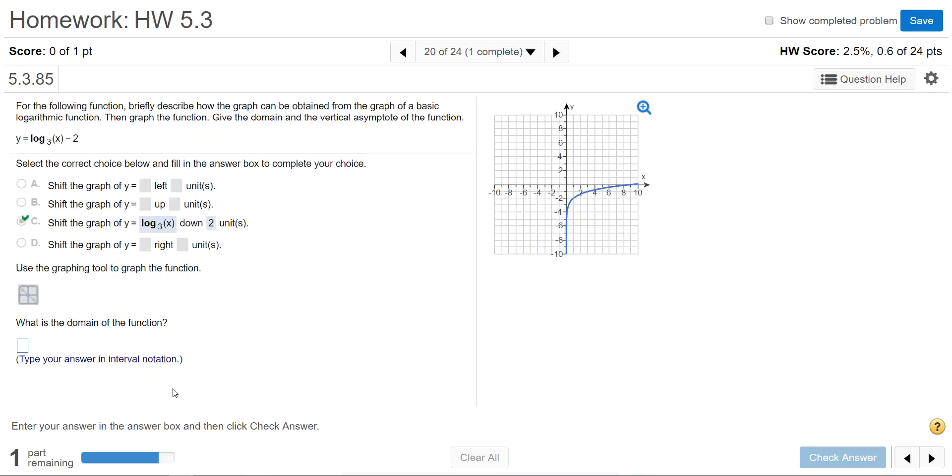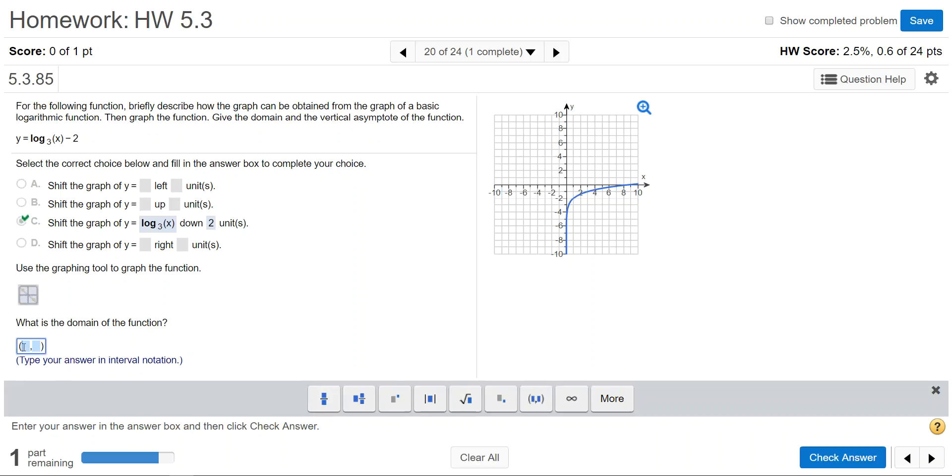Now it asks for the domain of the function. Click in the box—the domain is from the asymptote at 0 and then it goes right forever. So the domain is along the x-axis interval and it's your left and right limits. I'm going to select the parentheses tool, type 0 in that first box, tab to the next option, and then select the infinity button. Make sure you're in the blue box and then you have infinity.